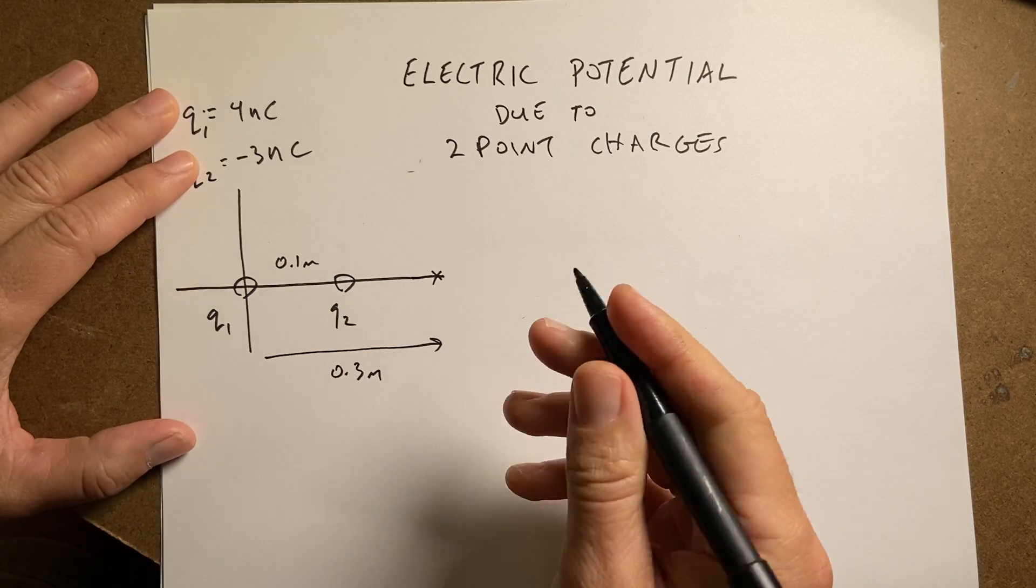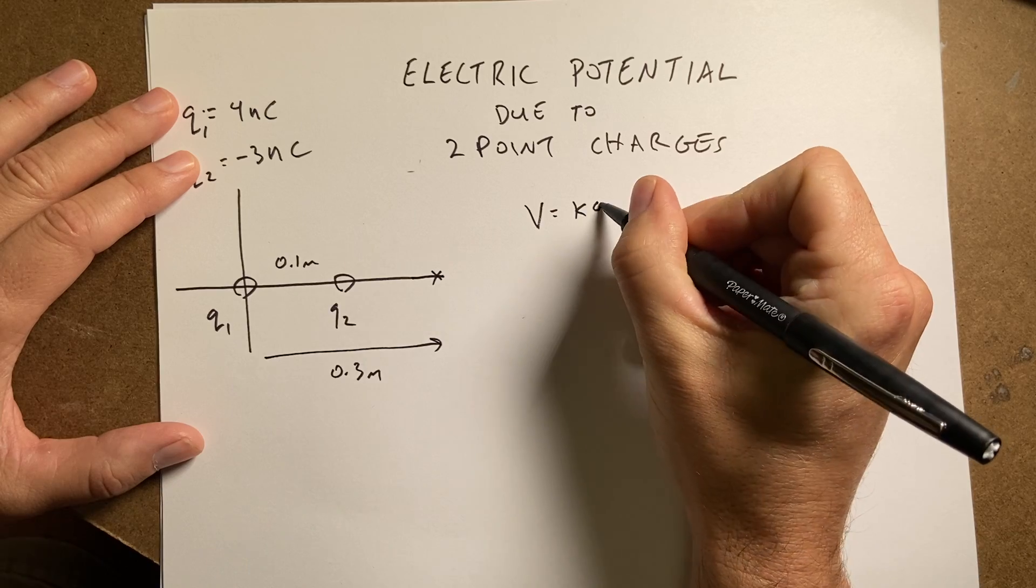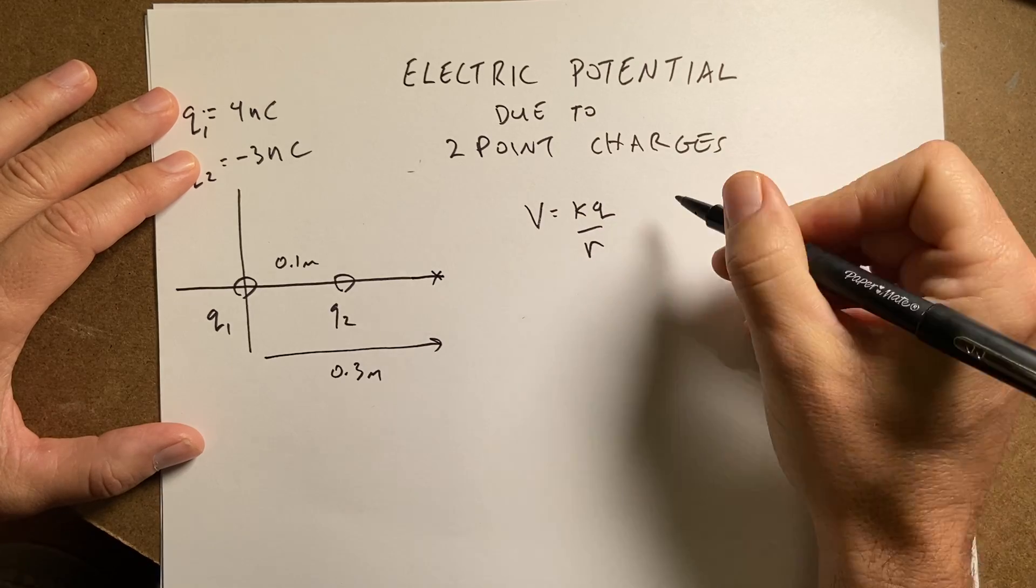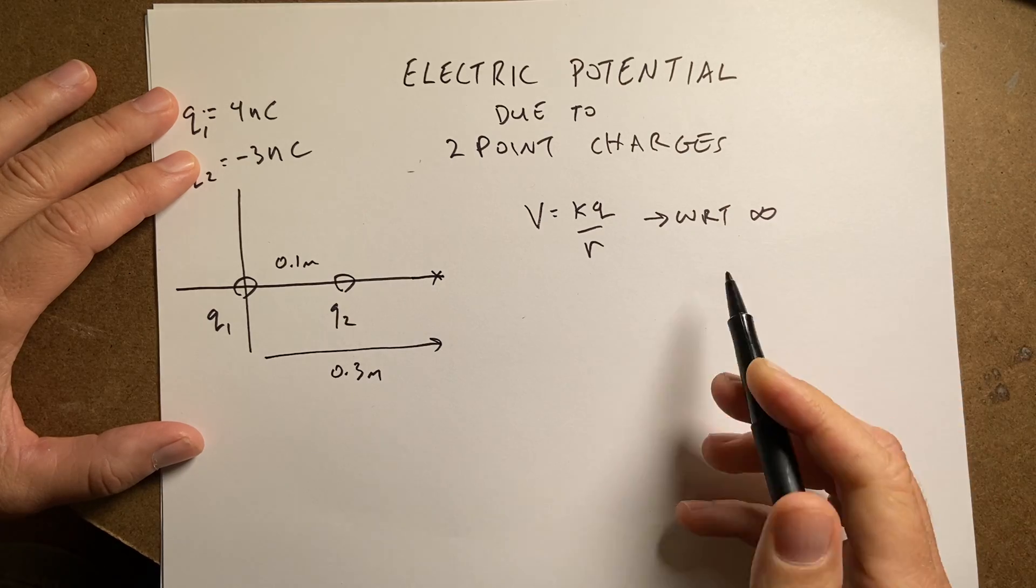So the first thing we need to know, remember, is the electric potential due to a point charge is KQ over R. And this is with respect to infinity. And that's important.